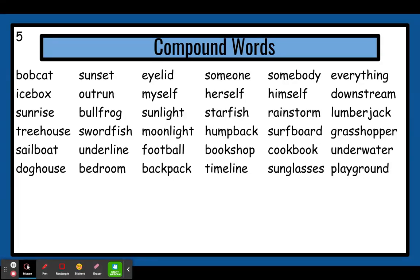We have two smaller words. The first one is ice, and the second part is box. We know what ice is, and we also know what box is. So if we put them together, we can figure out what an icebox is — it's a box that holds ice; in other words, like a freezer. Here we have out, and the second part is run. Each of those is a word by itself. Out and run. You put them together, you have outrun.